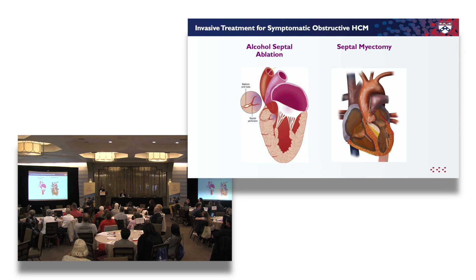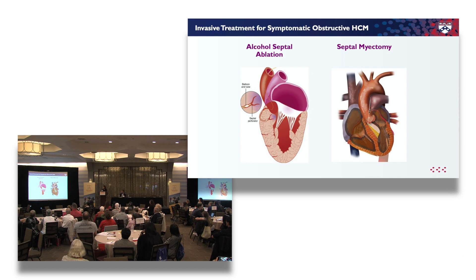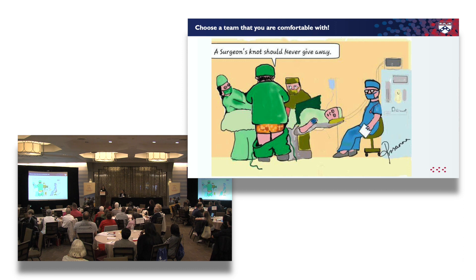If you have obstructive HCM — meaning you can't get blood out of your heart effectively because a thick part of the muscle is sticking out, usually in the septum — we have two options. We can do an alcohol ablation, where we cause a controlled heart attack to the blood vessel supplying the thickest part of the heart to thin it out. Or we go in surgically: the surgeon goes through the aorta and cuts out a small bit of the thickened muscle. You need to pick a team you're comfortable with, and experience matters.